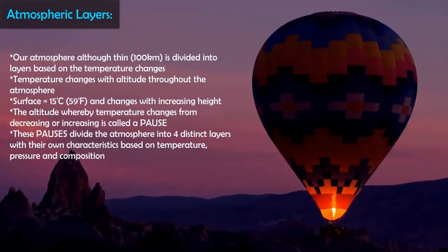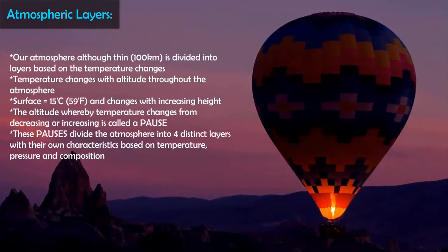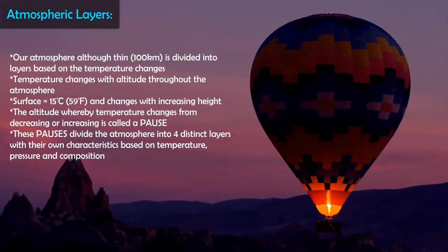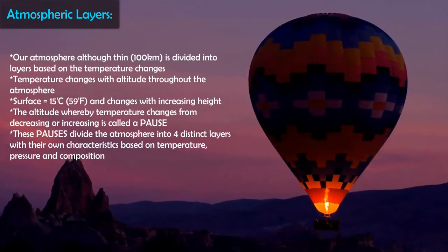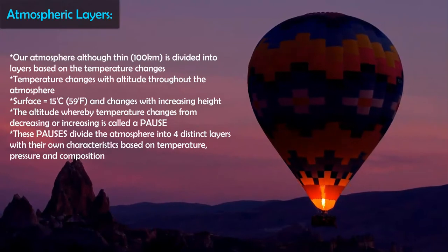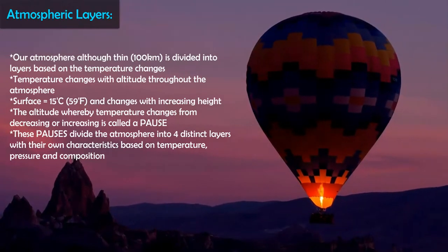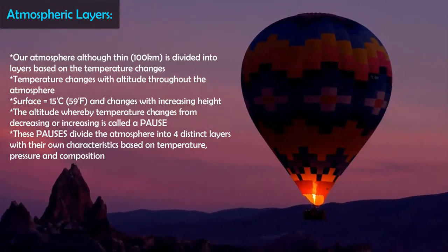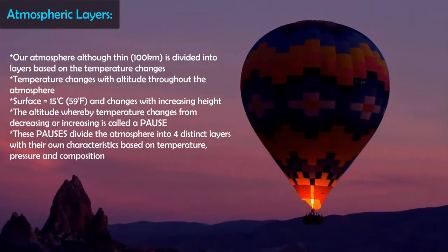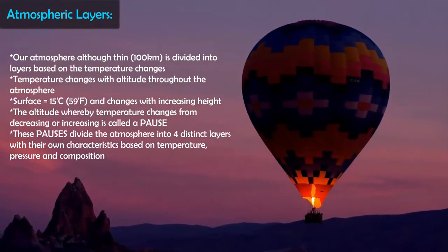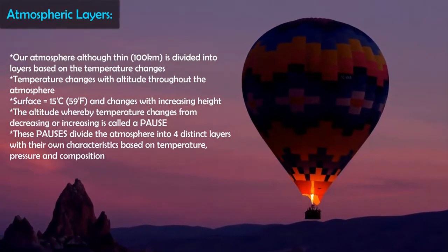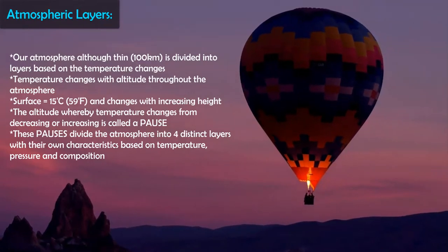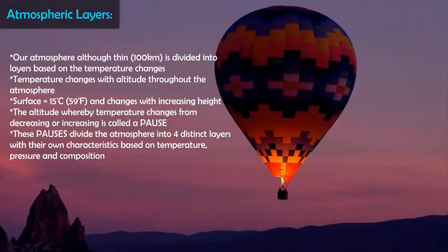Our atmosphere is made of air and held by gravity — nitrogen, oxygen, argon. It goes from the surface up to about 100 kilometers, which is the general consensus of where space starts. Space is the absence of air molecules. Even though the atmosphere is thin, it is divided into five distinct layers.